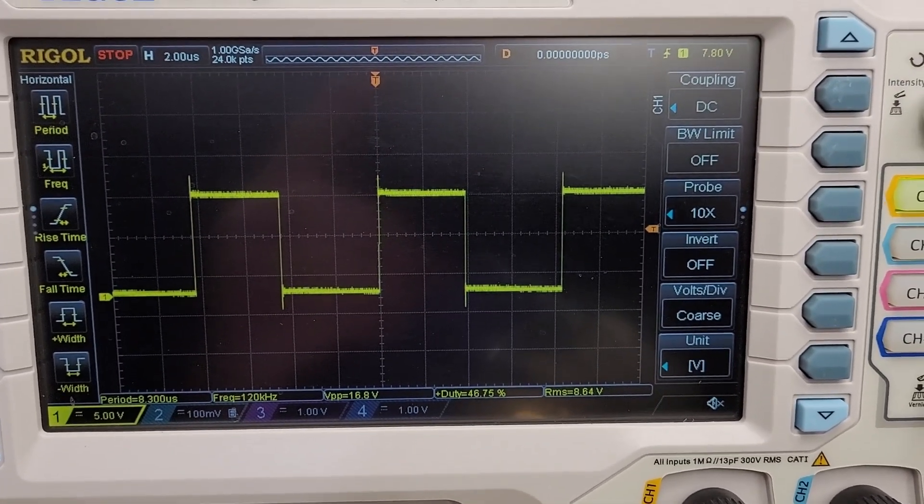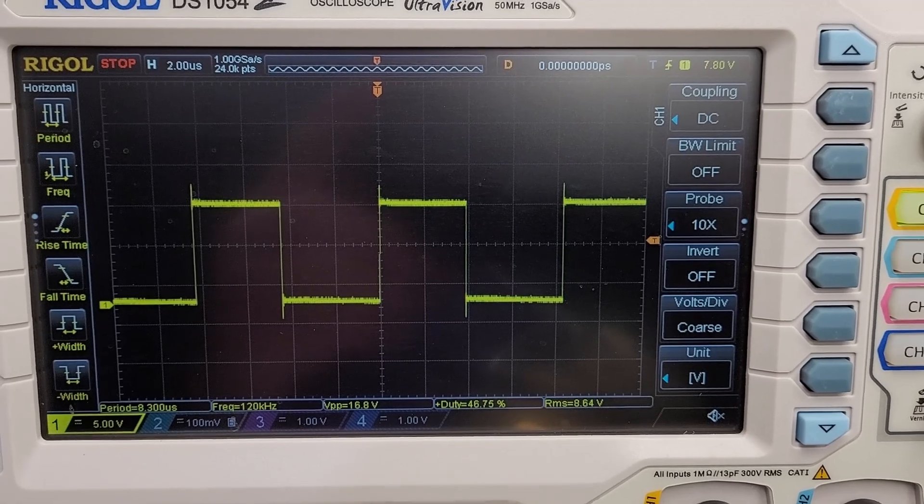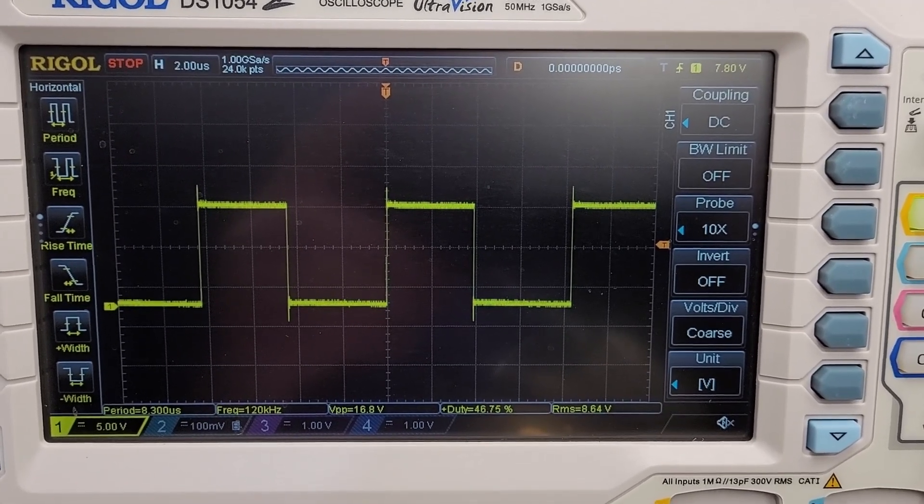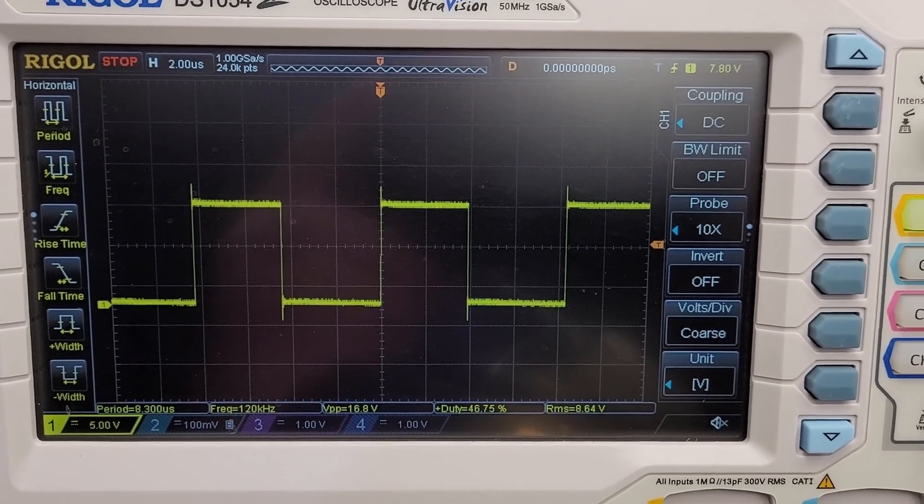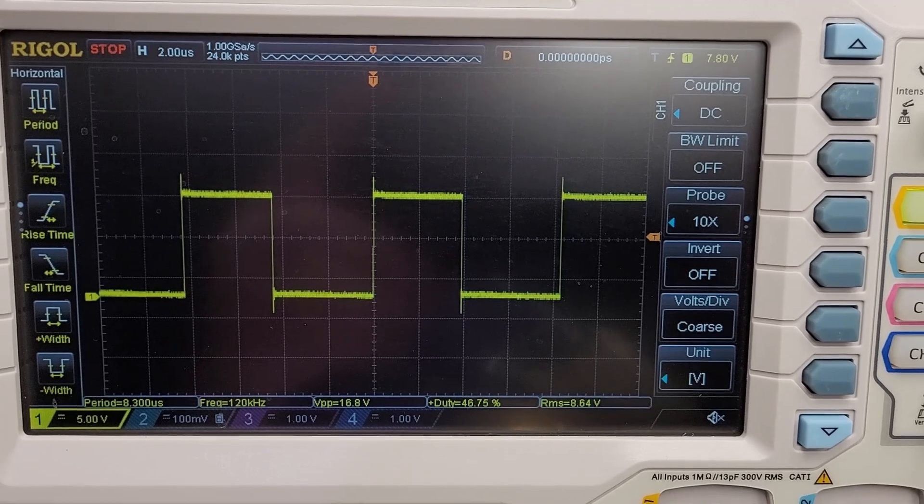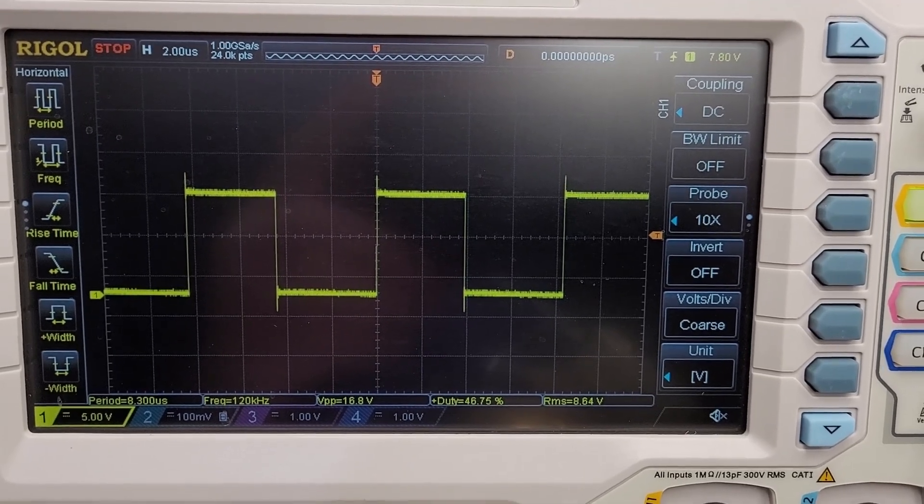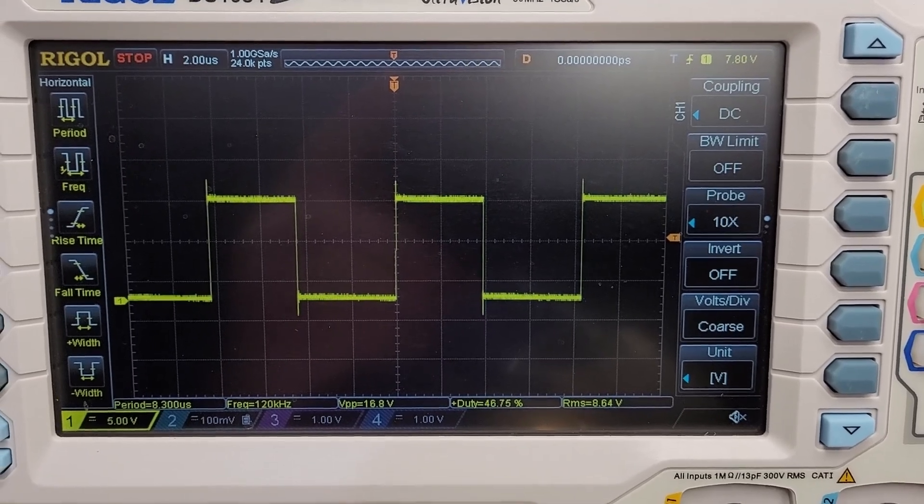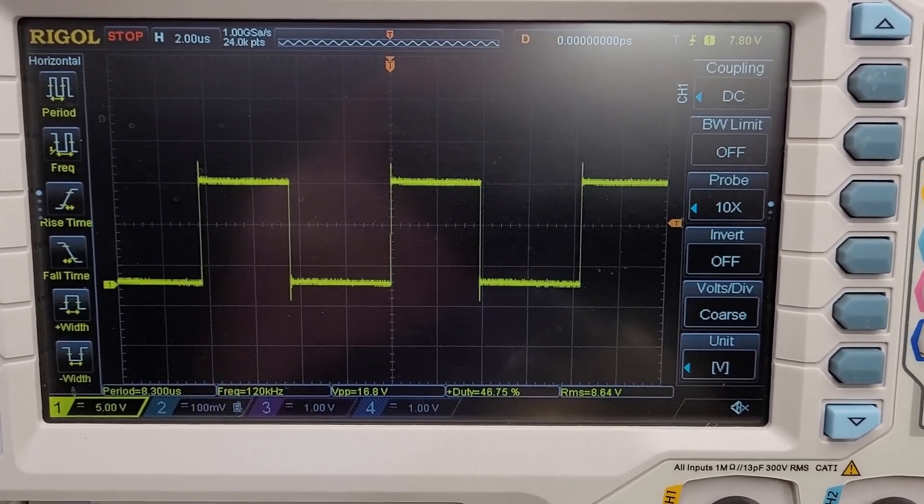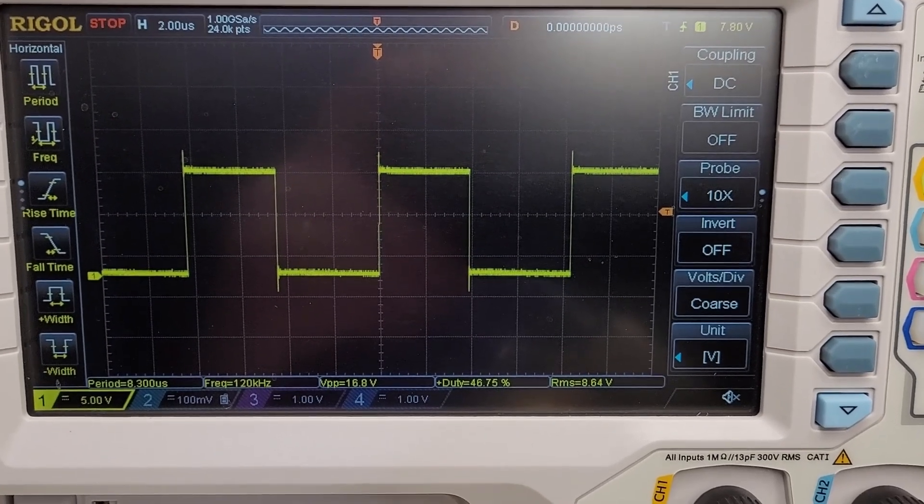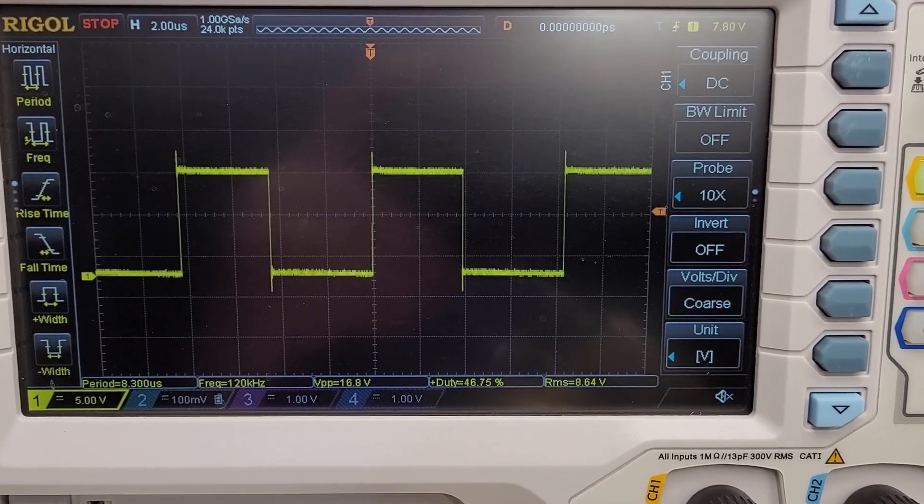As you can tell, it's 120 kilohertz. Peak to peak voltage is 16.8 volts. The duty cycle is about 50 percent, which is what I'd like to see. And the RMS voltage is 8.6 volts. So I'm very happy with that. It looks absolutely perfect. Now we may have to fool this thing into driving the other FET, but I'd like to see very similar results.